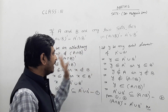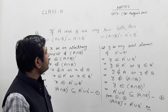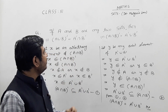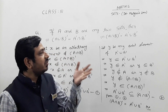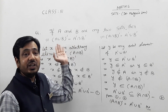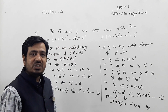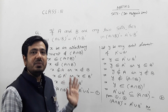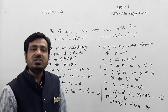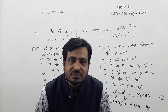This proves the second De Morgan's law. By this method, you can prove any De Morgan's law. Note that if you take any example of A and B and show both sides are equal, that is verification, which was done in the previous video. This is the formal proof of De Morgan's law. Thank you for watching. Namaste.